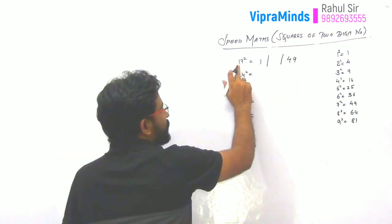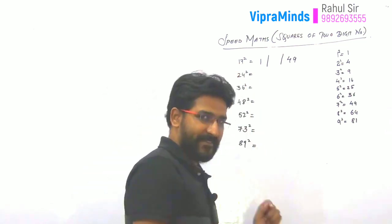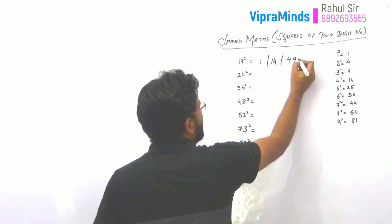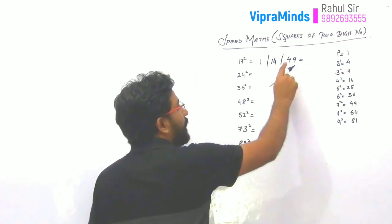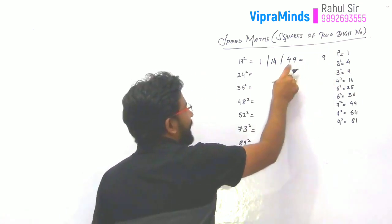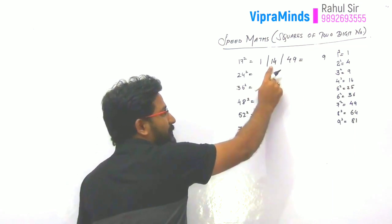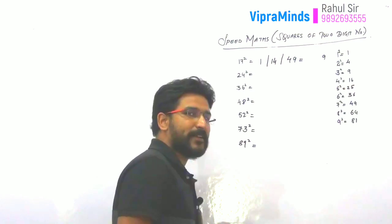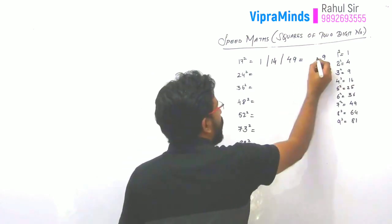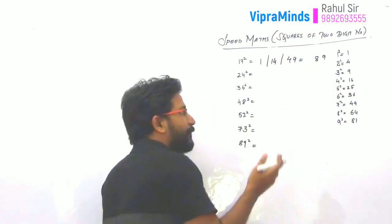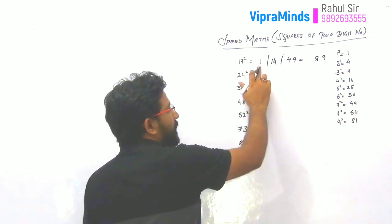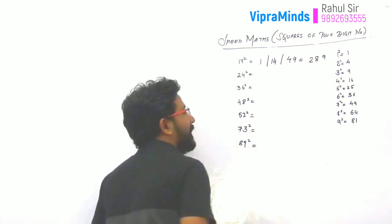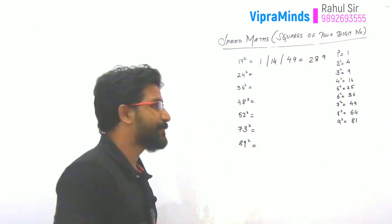Then multiply these two digits: 1 into 7 is 7, and the double of 7 is 14. Write 14 in the middle block. Now in the third block it is 49, so take the unit place value — that is 9 — and carry forward 4 to the middle block. So 4 plus 14 is 18. Write 8 and carry forward 1 to the first block: 1 plus 1 is 2. So your answer will be 289.